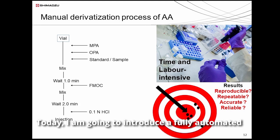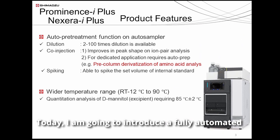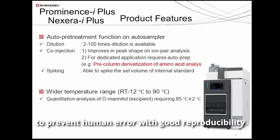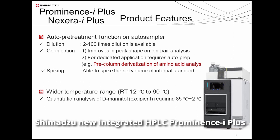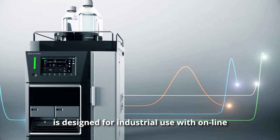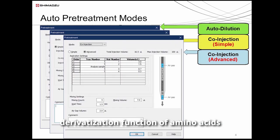Today, I'm going to introduce a fully automated pre-column derivatization method to prevent human error with good reproducibility. Shimadzu's new integrated HPLC Prominence i-Plus is designed for industrial use with an online derivatization function for amino acids before injection into a column.